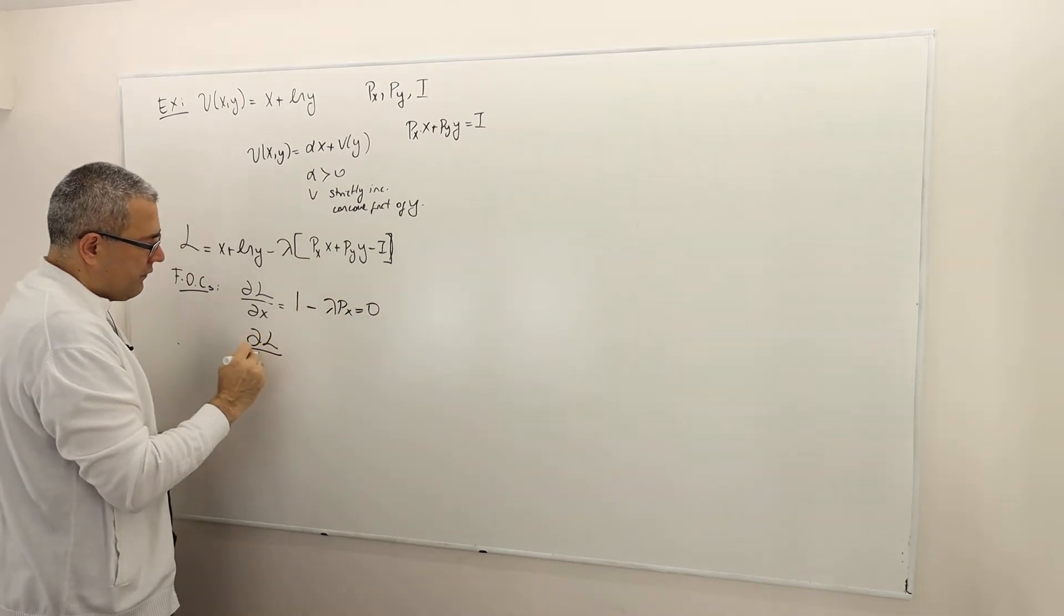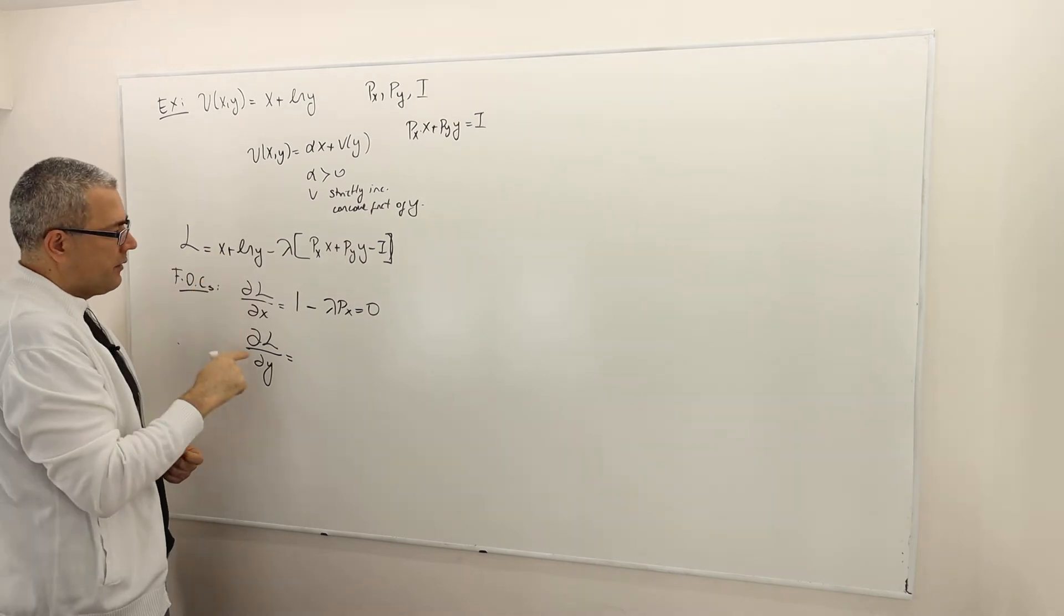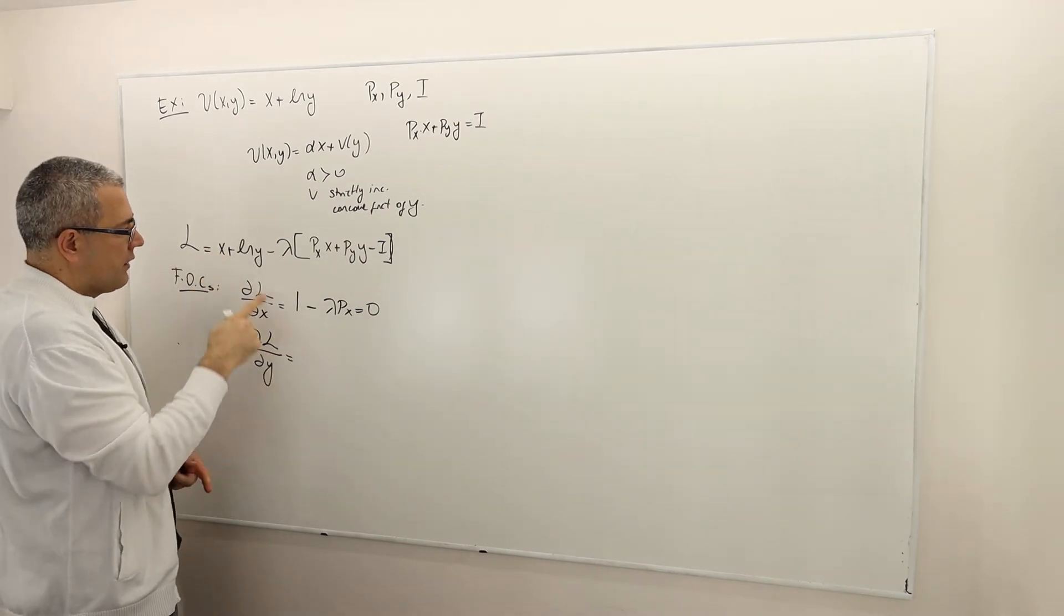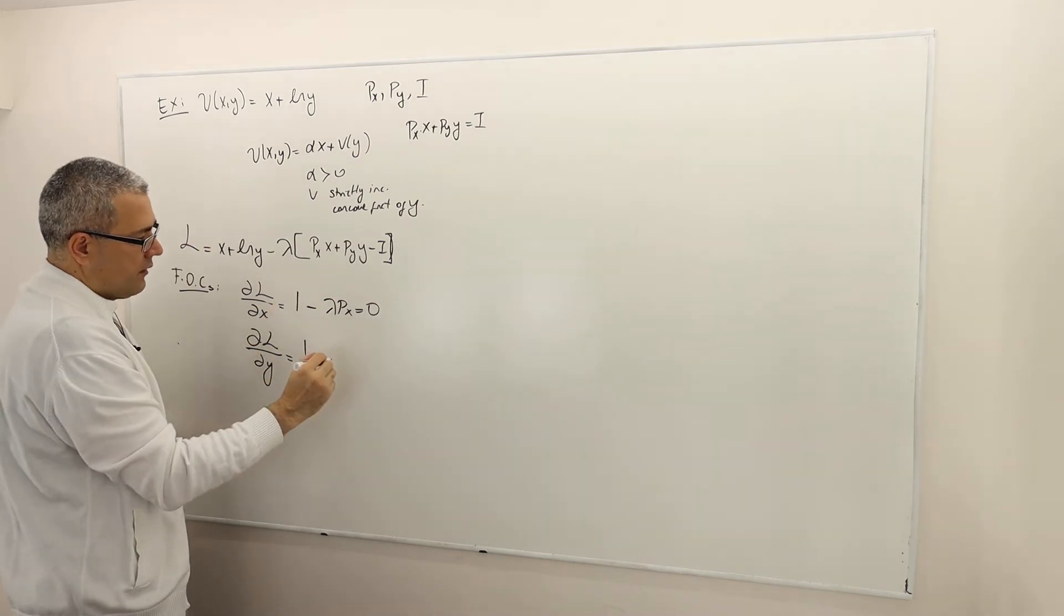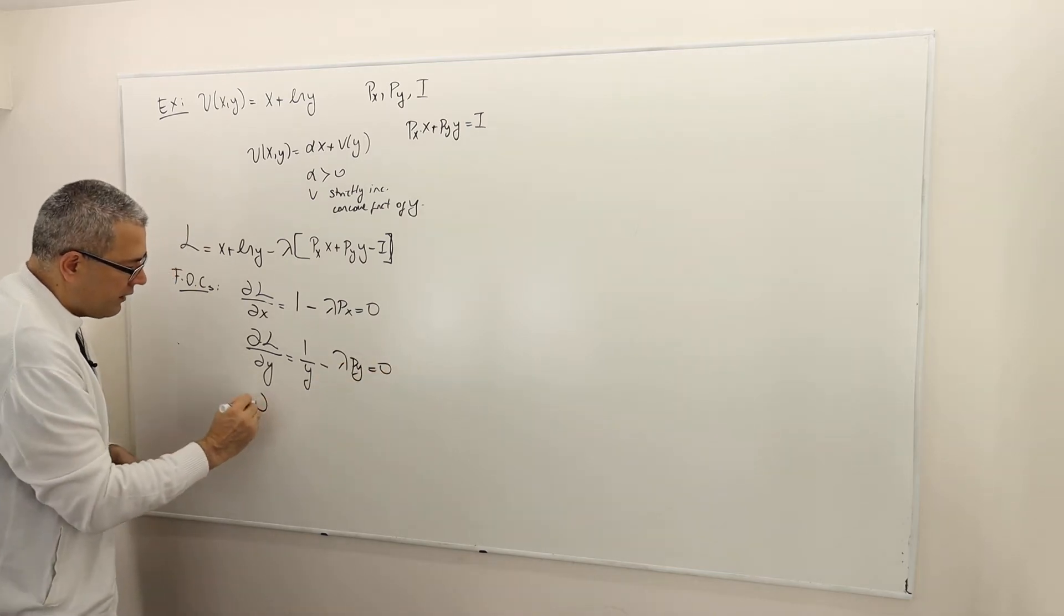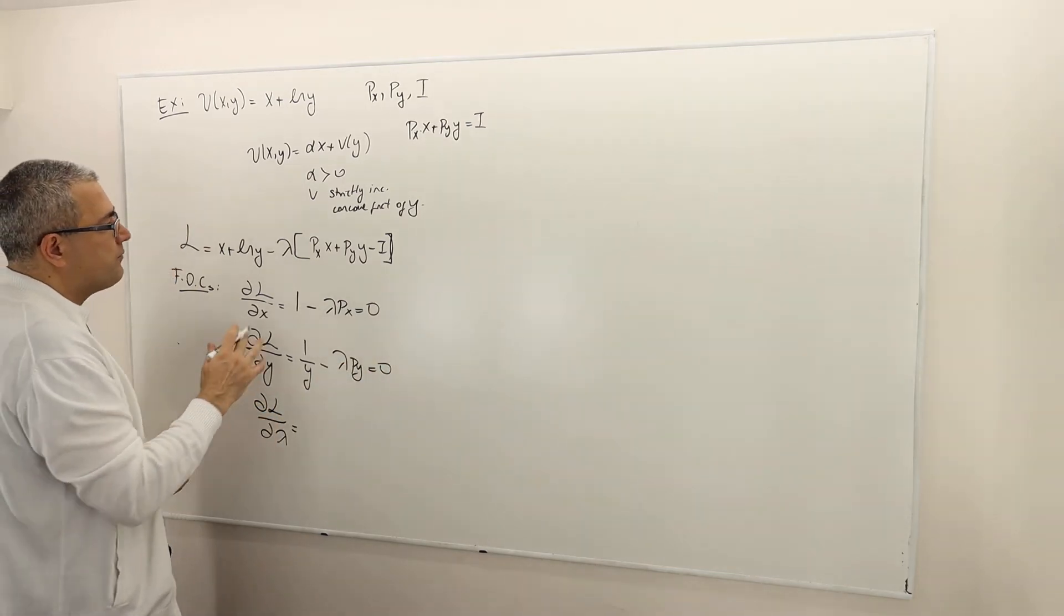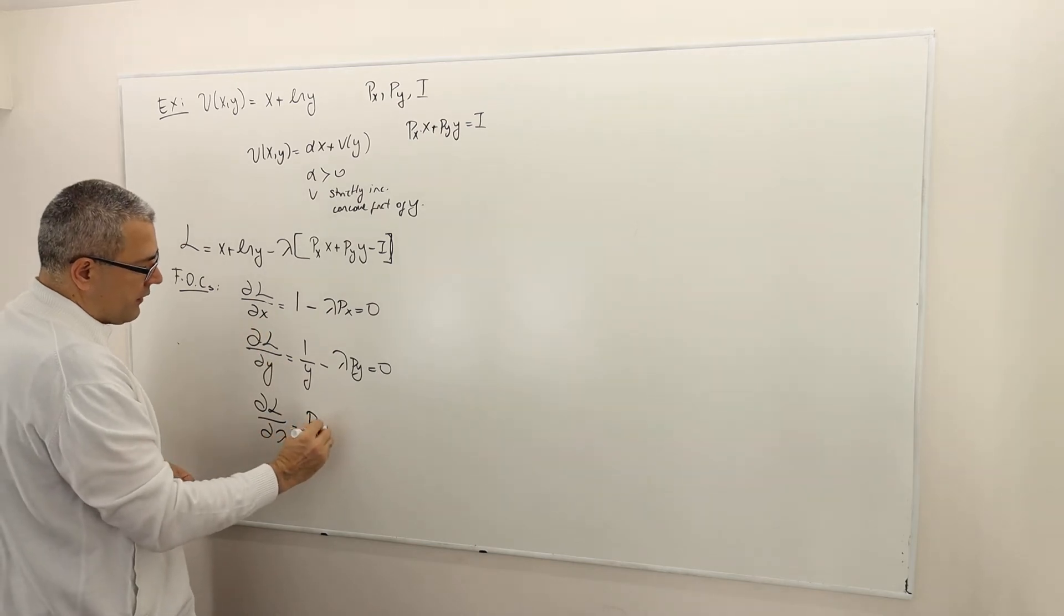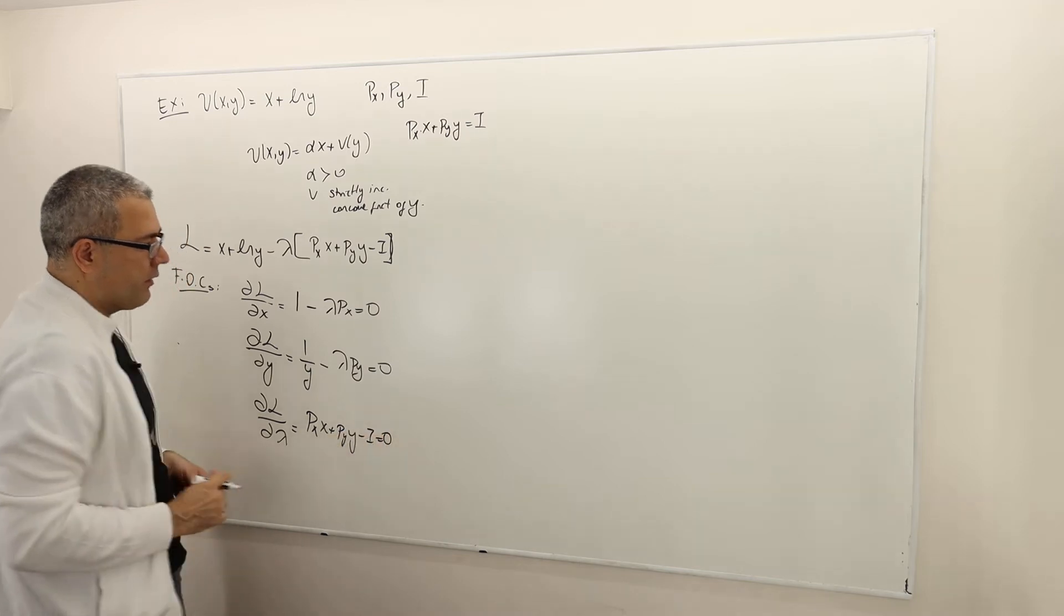The partial derivative with respect to y: the derivative of x with respect to y is zero, so I'm not going to write it. ln y is just one over y minus lambda py equals zero. And finally the Lagrangian with respect to lambda equals the constraint px·x plus py·y minus income equals zero.